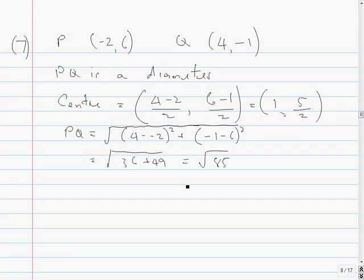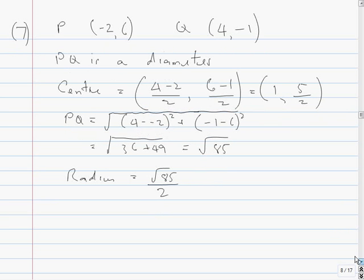Okay, so PQ is 85, so the radius is equal to root 85 divided by 2. That looks a bit odd, so the equation of the circle is x minus the center, which is 1, squared, plus y minus 5 over 2 squared,